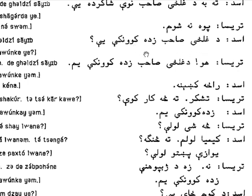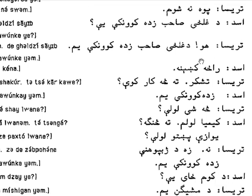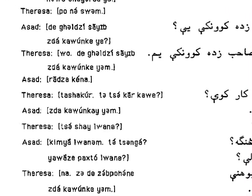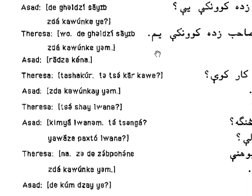'Zdakawun ke' means 'student,' 'yeh' means 'you are.' Teresa responds: 'woa, de ghilzai saib zdakawun ke yam' — yes, I am Ghilzai Saib's student. 'Yam' is like 'am' — similar to the English 'am.' 'De ghilzai saib zdakawun ke student yam' — 'yam' means 'am,' similar to English.